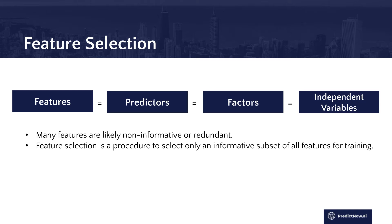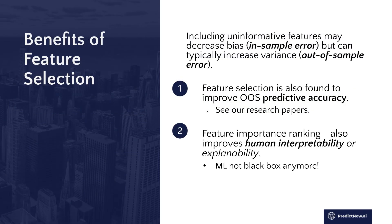Feature selection is a way to remove these non-informative x values in order to improve predictive accuracy. If you include non-informative variables, you will very likely introduce overfitting and decrease your predictive performance out of sample. So we want to apply feature selection to get rid of them and improve accuracy, but there is another reason why we want to apply feature selection.